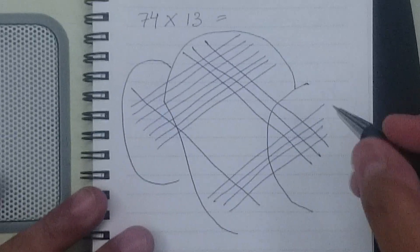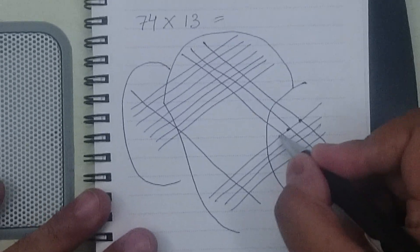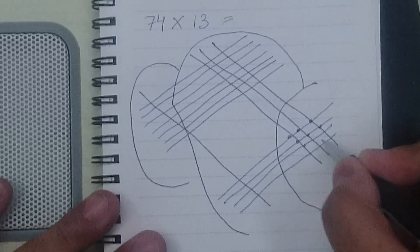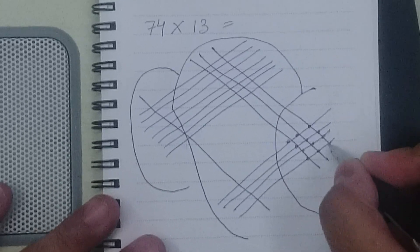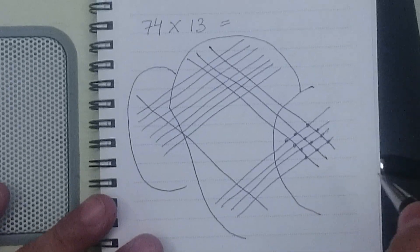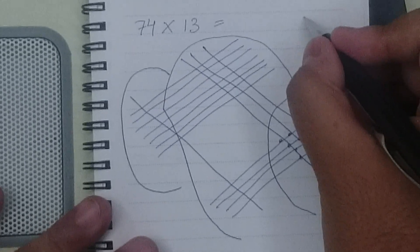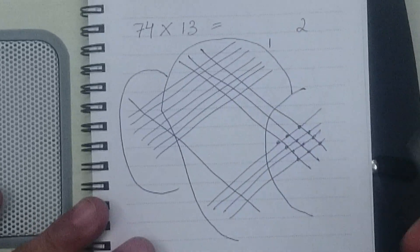Now let's count the intersections. 1, 2, 3, 4, 5, 6, 7, 8, 9, 10, 11, 12. So now there's the trick. This comes out to be 12. So the first digit becomes 2 and 1 gets carried over to the second section.